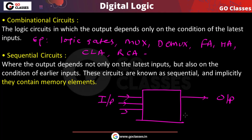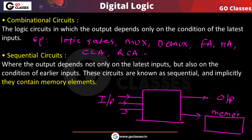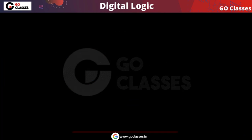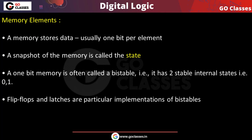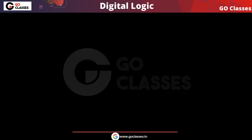This sequential circuit has to remember the previous history of outputs and inputs, so we need something called memory. Because this sequential circuit has to memorize what has happened in the past — what inputs were applied and what the outputs were. Sequential circuits contain memory elements, and the very basic memory element is a latch or flip-flop.